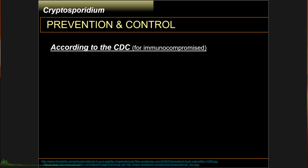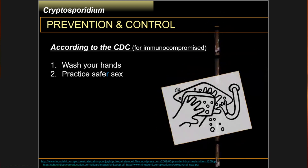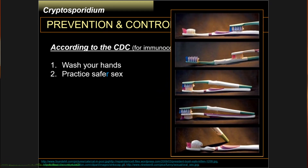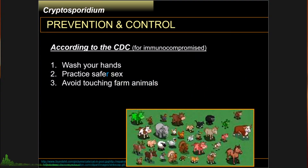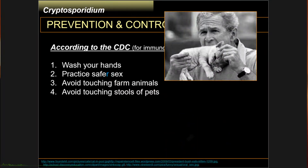For prevention and disease control of cryptosporidiosis, according to the CDC, immunocompromised patients should always wash their hands, practice safer sex including use of barrier methods, personal hygiene, and limitation of anal-oral sex. Third, avoid touching farm animals, especially young farm animals. Fourth, avoid touching stools of pets — especially young pets — and if you must clean pet stools, always wear gloves and dispose of them properly. Be especially careful when handling diarrheal stools or stools of stray animals.